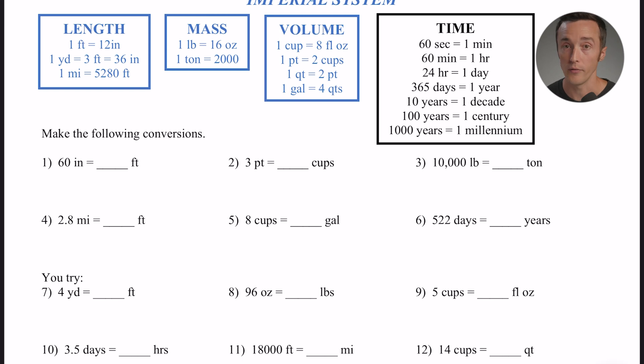For example, look at number one. It says 60 inches is how many feet? Well, I know that every foot is a group of 12 inches, so essentially what I'm wanting to do is take that 60 and divide it into groups of 12, because there's 12 inches in a foot. Well, 60 divided by 12 is 5. So 60 inches is the same as 5 feet.